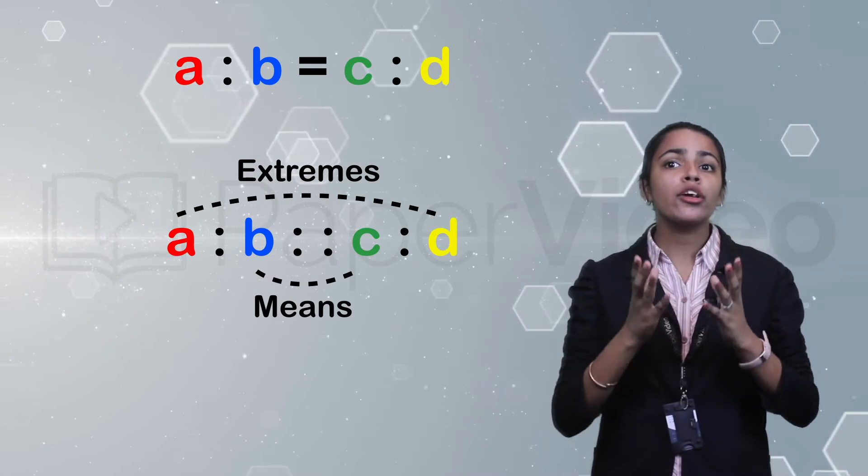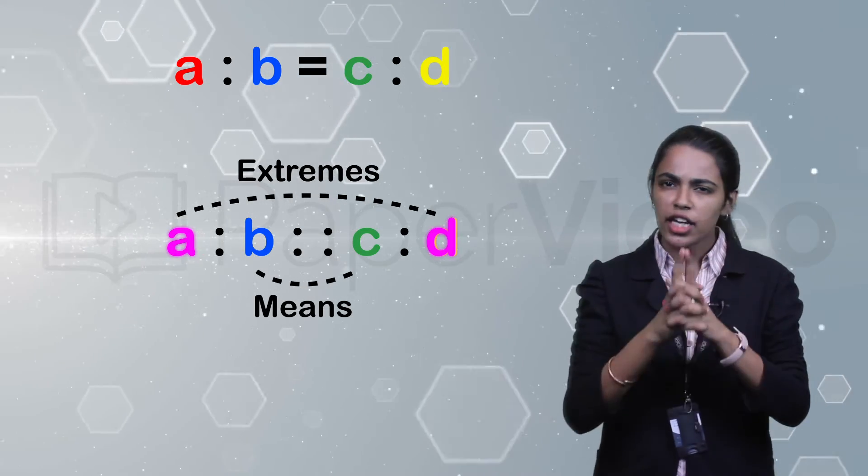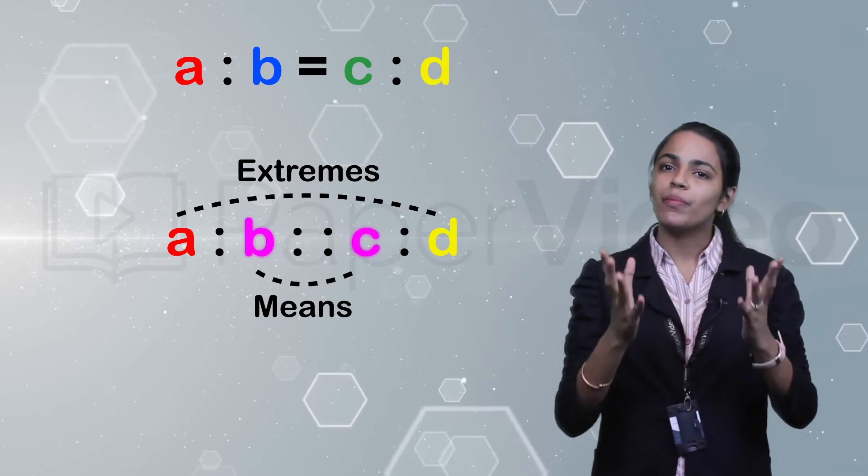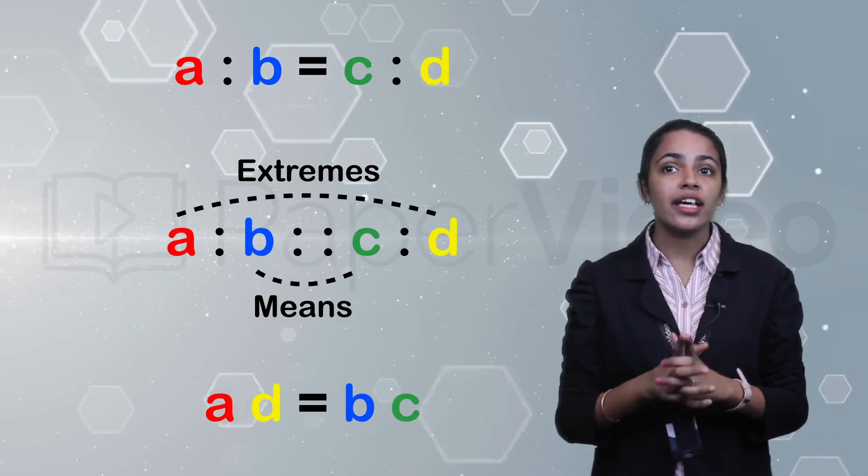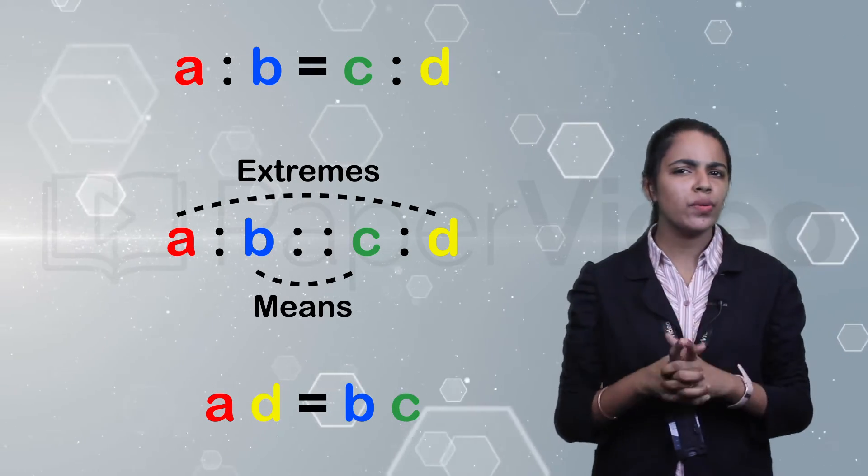In a proportion, product of two extremes is equal to product of means. That is, A into D is equal to B into C.